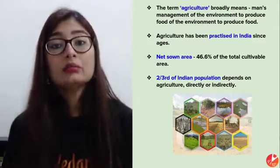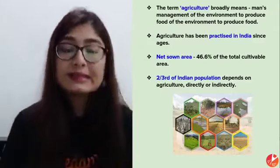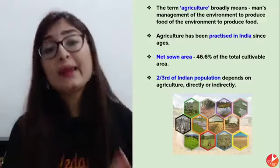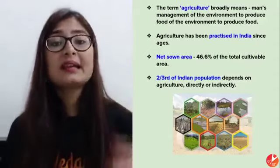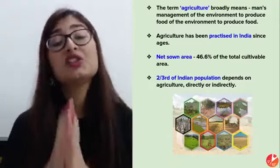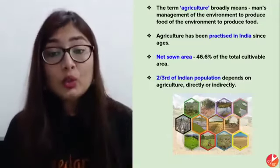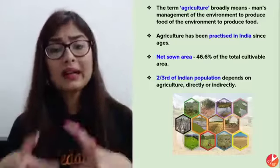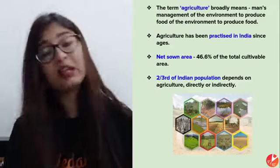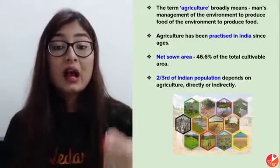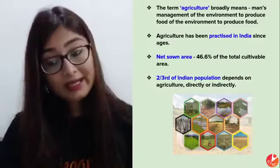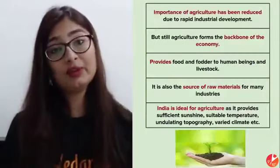The major purpose of agriculture is to get food for humans and animals. India and agriculture go way back — India has always been heavily dependent on agriculture. It is primarily an agricultural country. Two-thirds of our population, directly or indirectly, depends on it. In fact, 46.6 percent of our total available land falls under the net sown area — the area where cultivation happens.